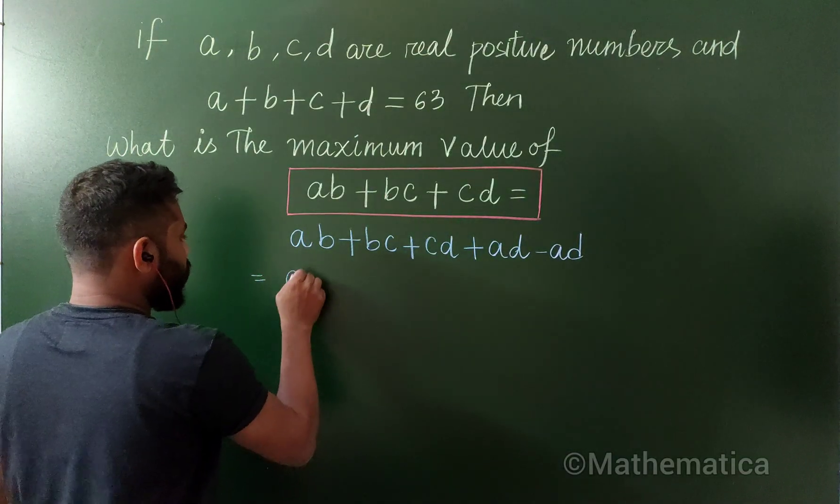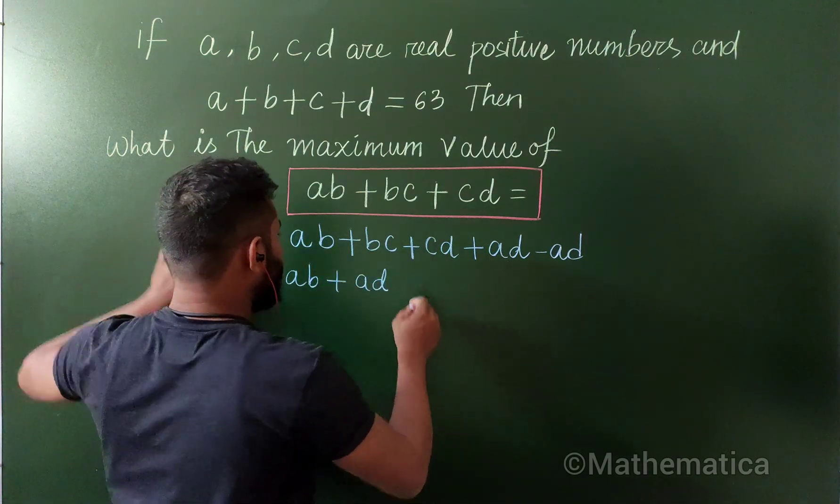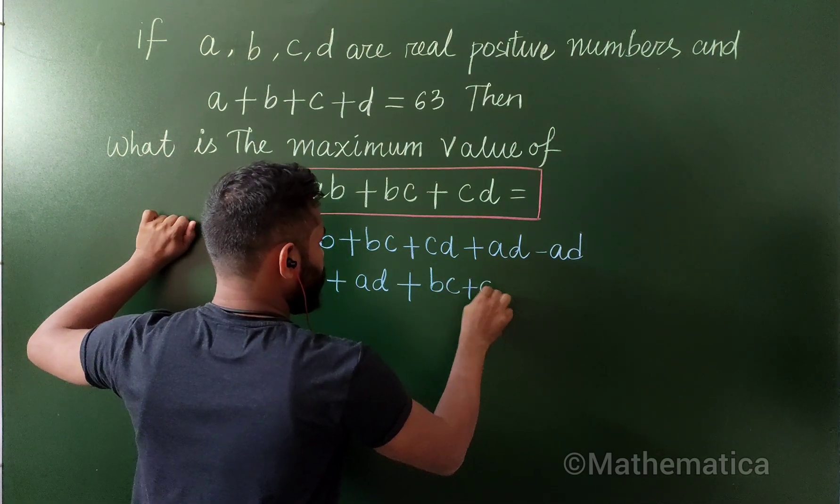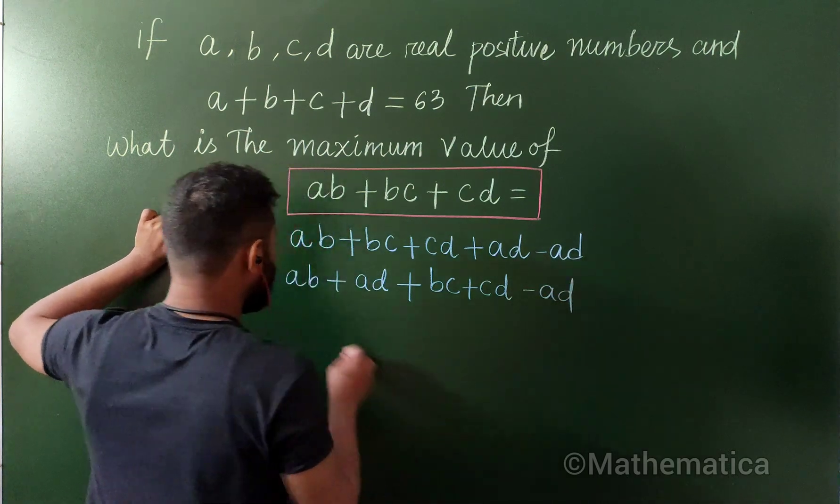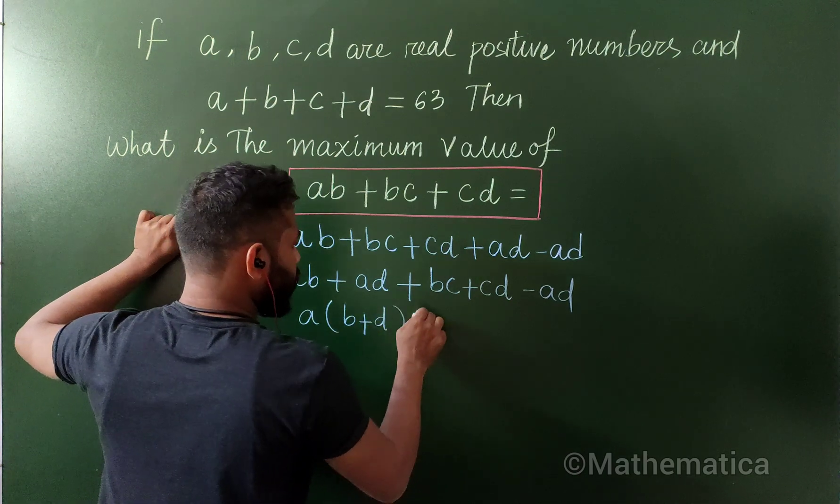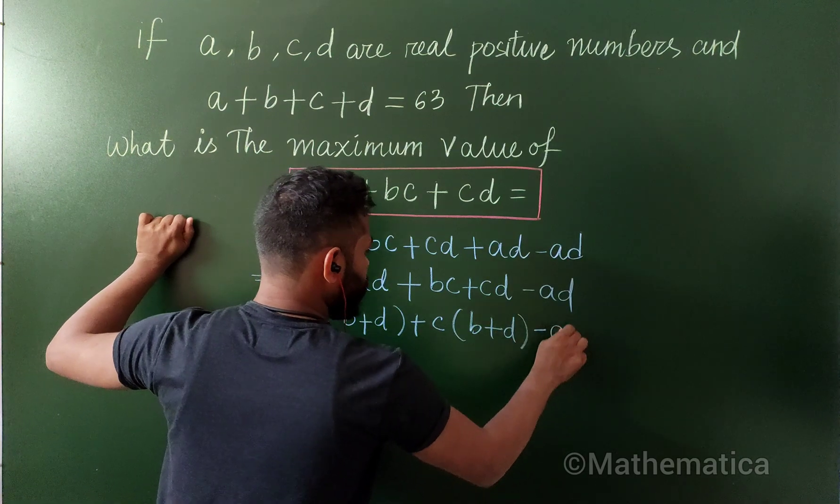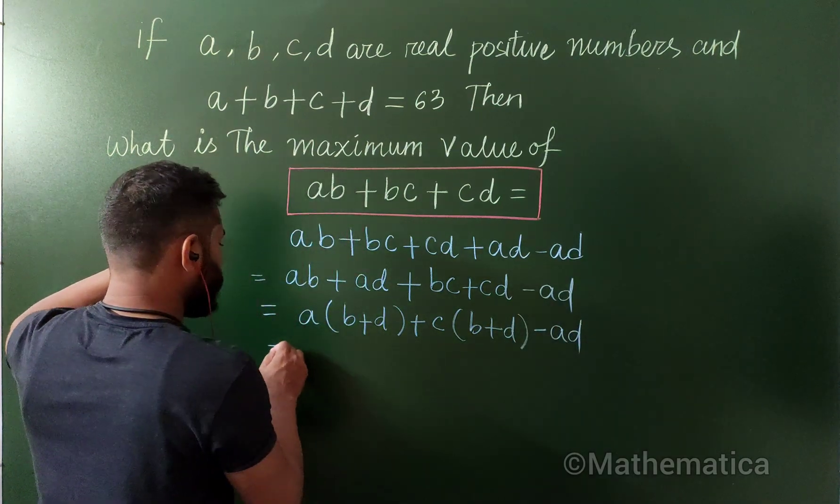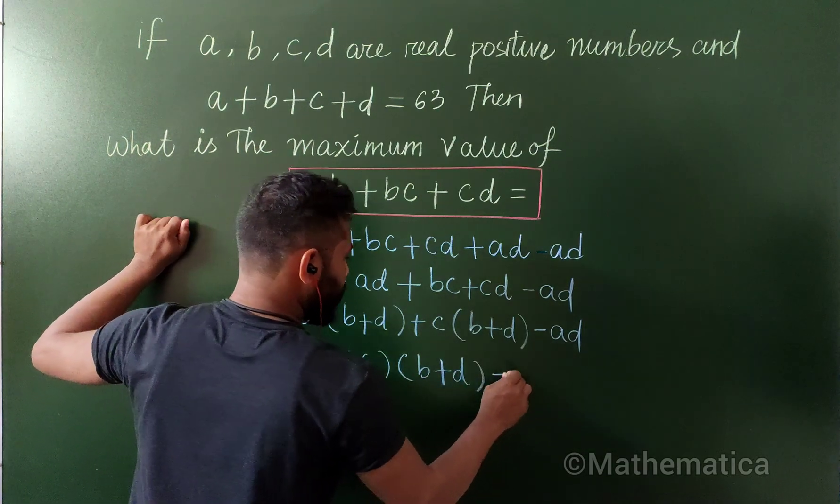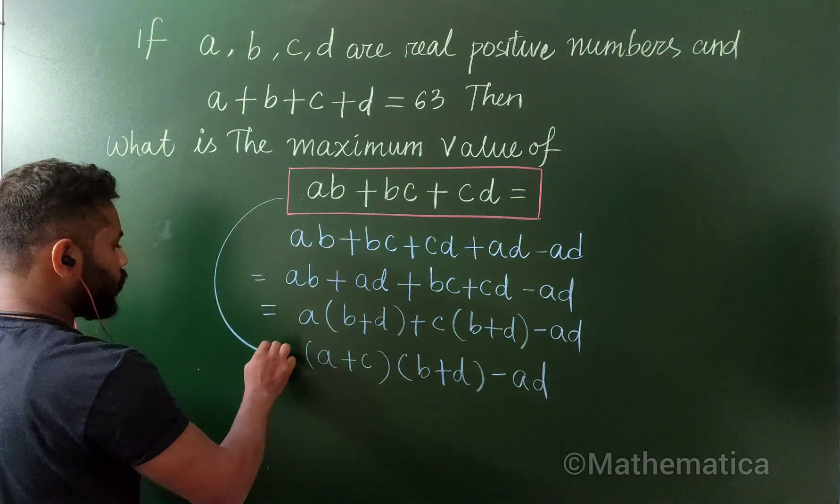And now let's factorize if possible. So if I simplify, I will take ab plus last one ad, that is this one, and plus bc and cd and ad as usual. Then taking a common, b plus d, and taking c common, b plus d. This is ad. And now this is a plus c into b plus d minus ad. Now this entire thing is equivalent to this one.